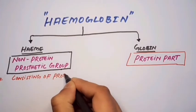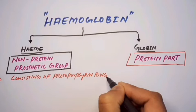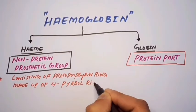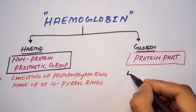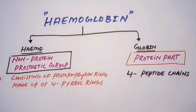Haem consists of a protoporphyrin ring made up of four pyrrole rings. The protein part is made up of four peptide chains.